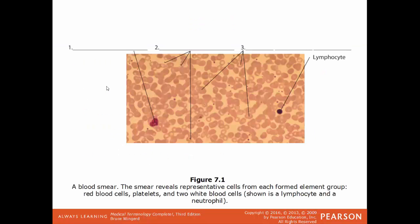A standard blood smear viewed under a microscope shows that a great majority of the cells are red blood cells. Scattered among those are various types of white blood cells — there are five different kinds, varying in appearance, size, and function.